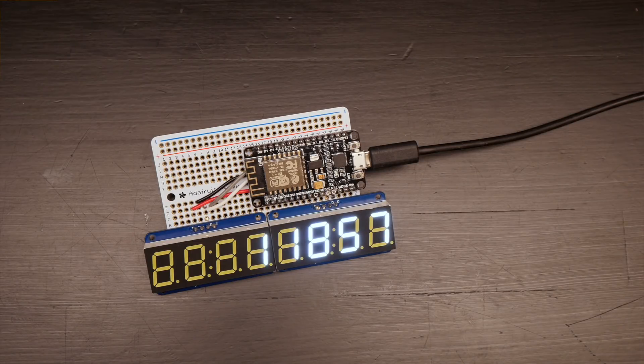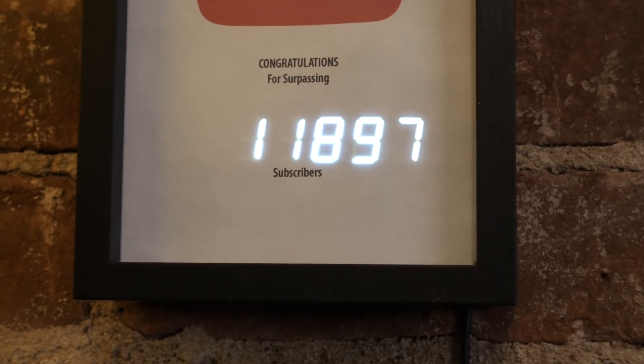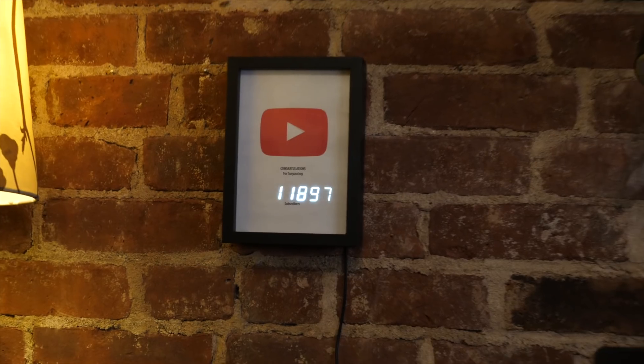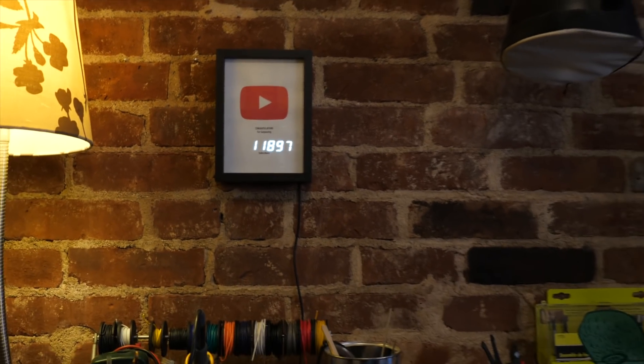If you don't remember version 1, here's the recap. The circuit uses an ESP8266 microcontroller to fetch the live subscriber count, then displays the number on a 7-segment display. The whole thing's inside a shadow box made to resemble a play button award.